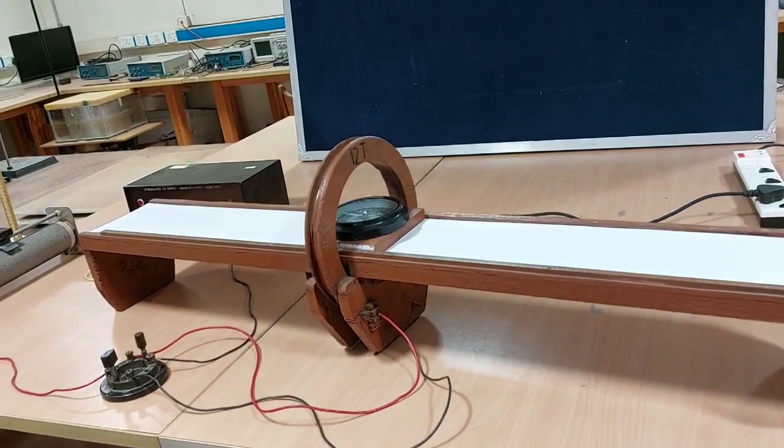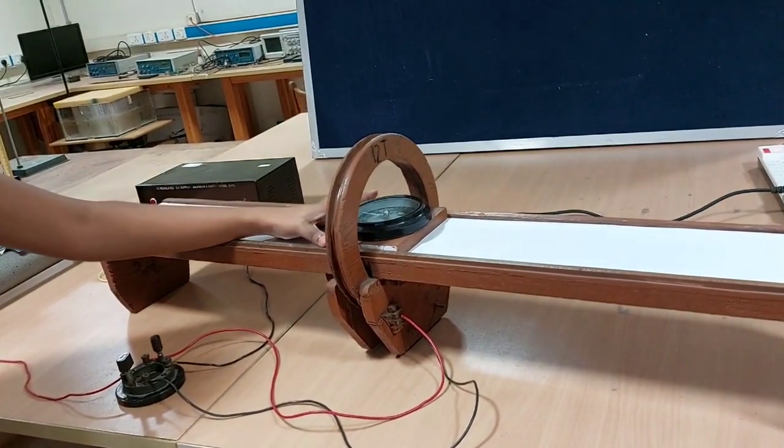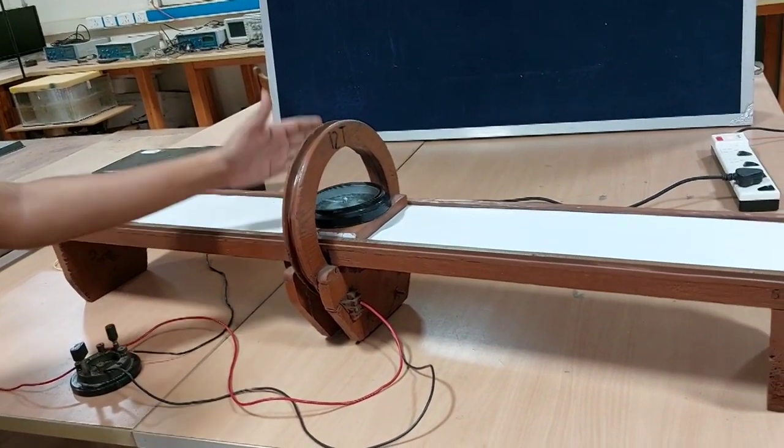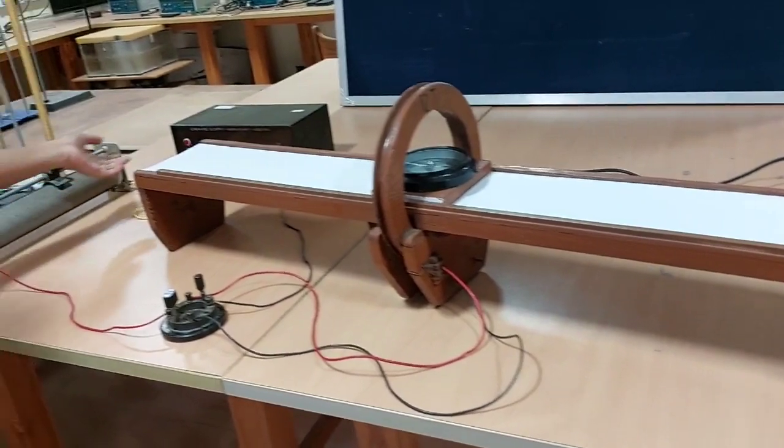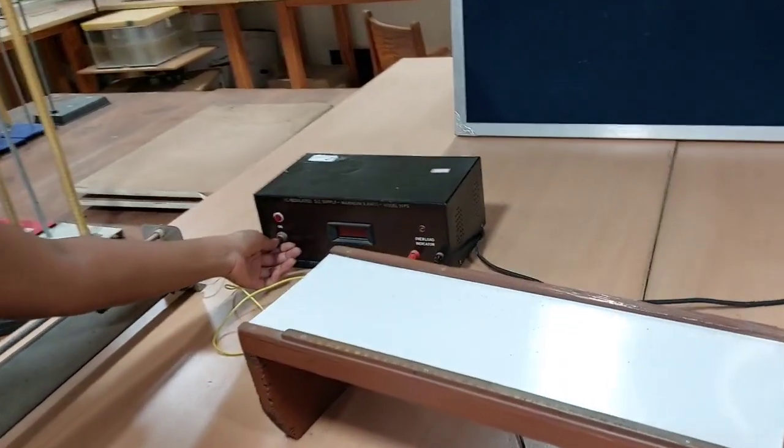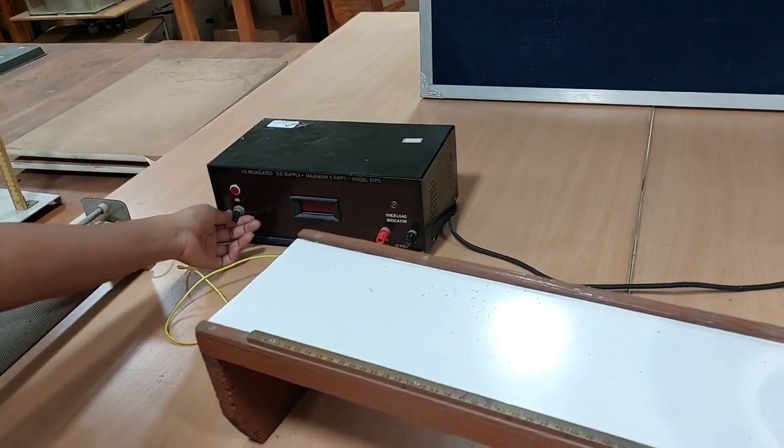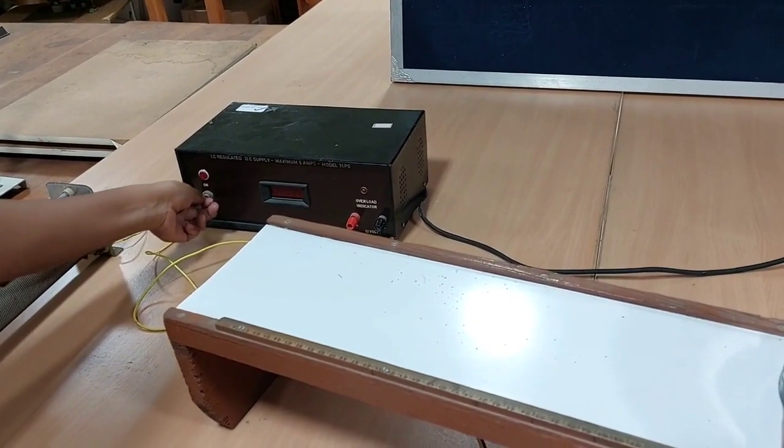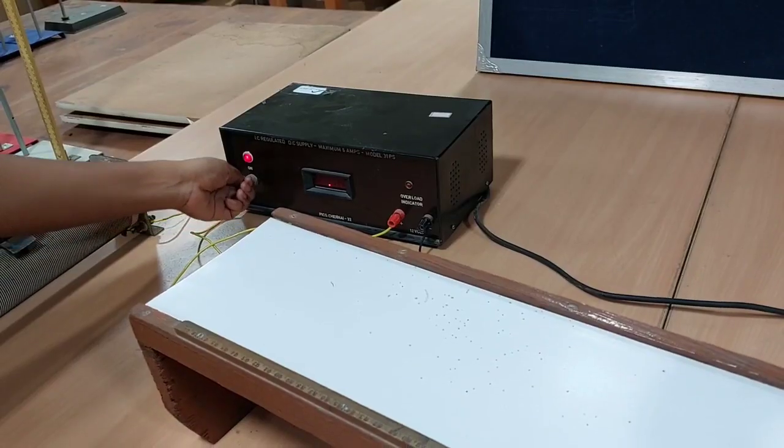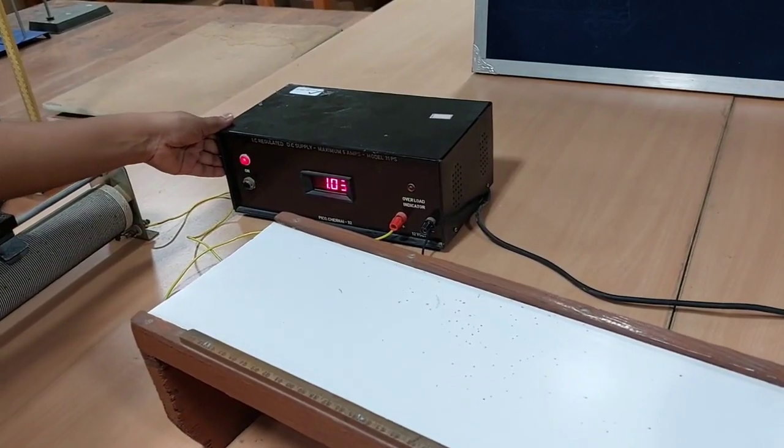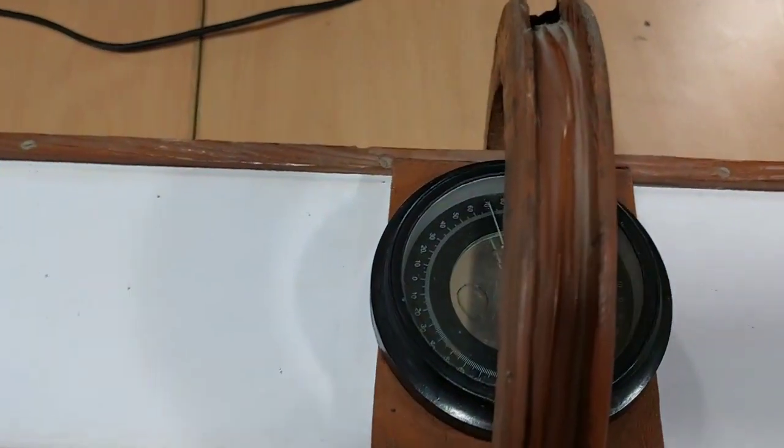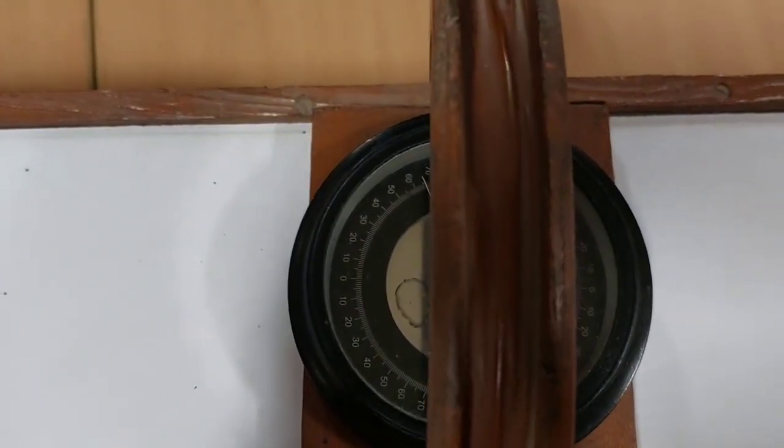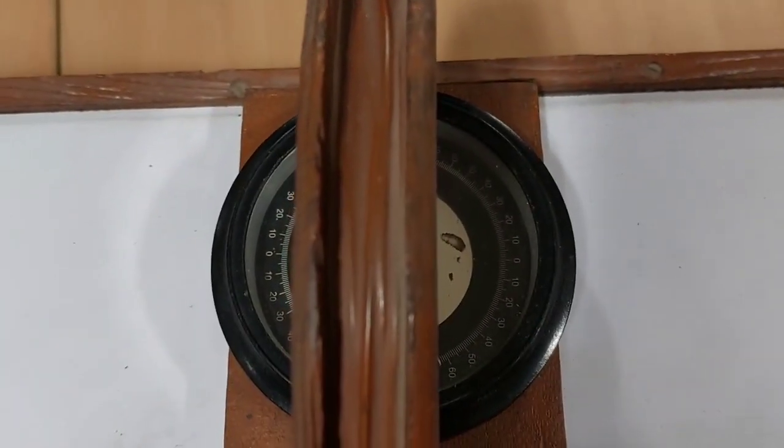We shall place the compass at the center of the bench, that is along the plane of the coil, and we shall pass a current of around 1 ampere which will remain constant throughout the experiment. As I switch on the power supply, you can see that the compass is reading around 65° and 65° on either side.